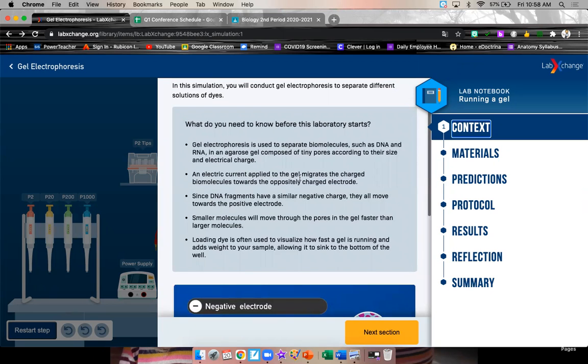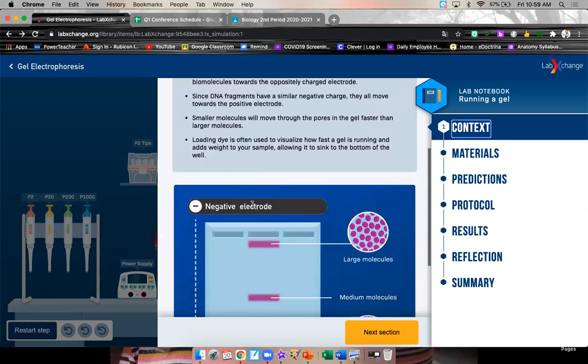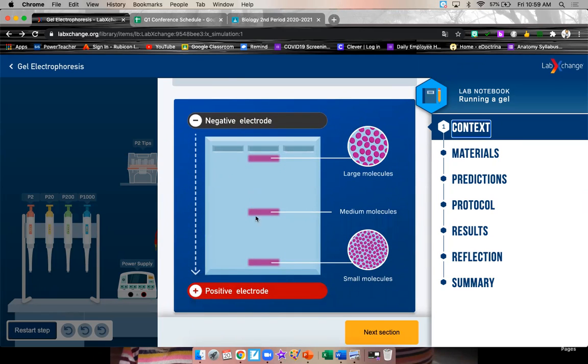An electric current applied to the gel migrates the charged biomolecules toward the oppositely charged electrode. Since DNA fragments have a similar negative charge, they all move toward the positive electrode. We're going to hook this bad boy up to some electricity. And electricity moves from a negative charge to a positive charge. So all the electricity is flowing in this direction. Your DNA is also negatively charged. And if you learn anything about magnets, you know that like charges repel each other. These are negatively charged. They don't want to be on the negative side. So they're going to get repelled away. Negative charges are drawn to the positive side. So they're going to get drawn toward the positive side of this agros gel. So that's what's going to make them move, the electric charges.